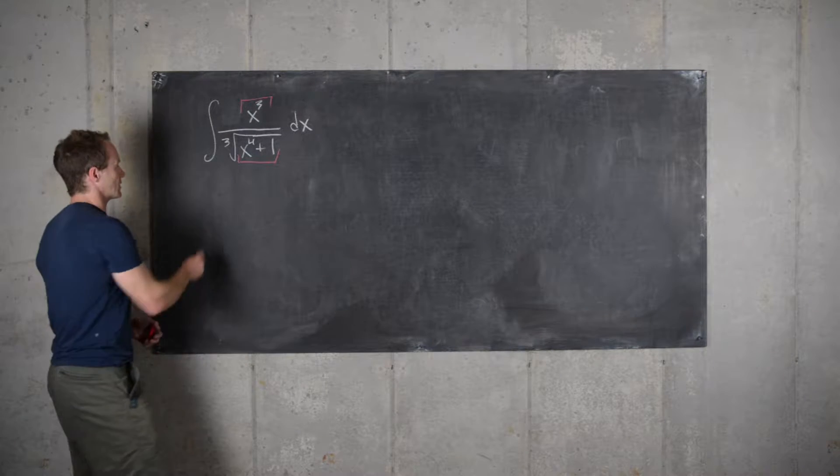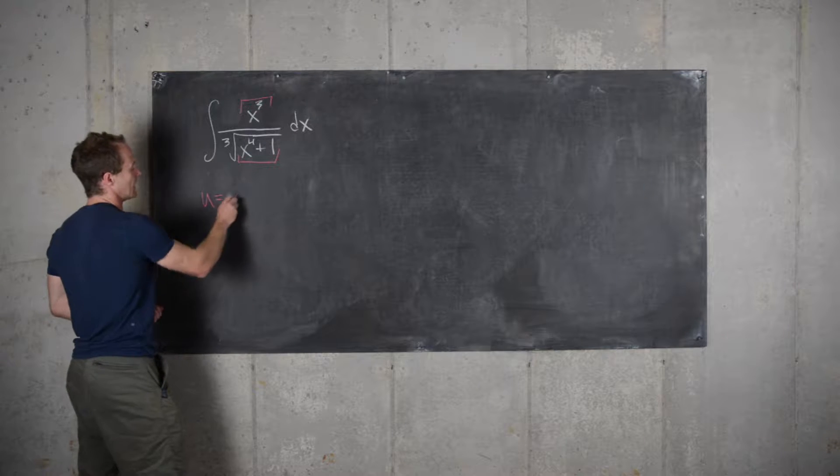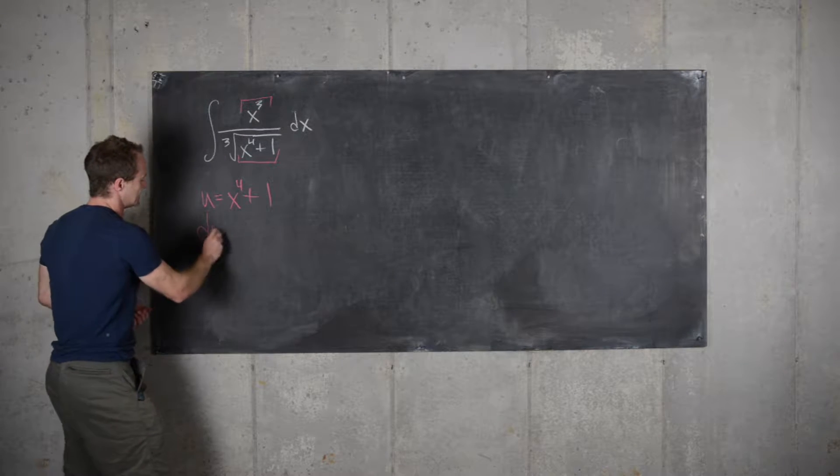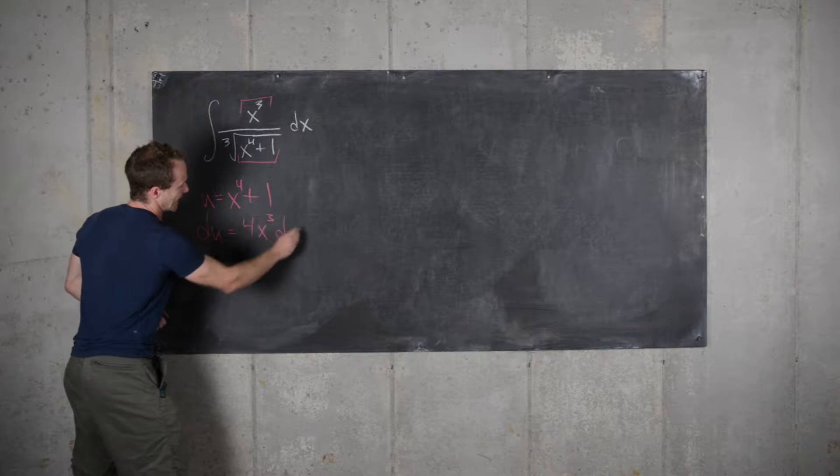So let's see how that works out. If we set u equal to x to the 4th plus 1, then we get du equals 4x cubed dx.